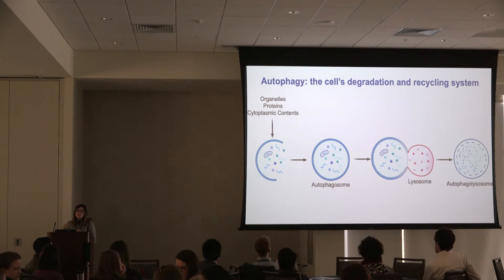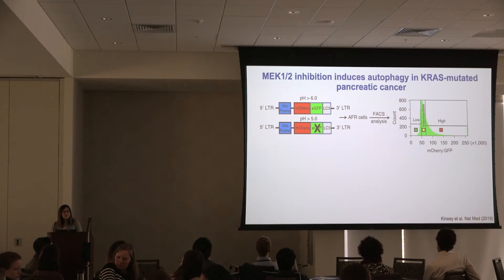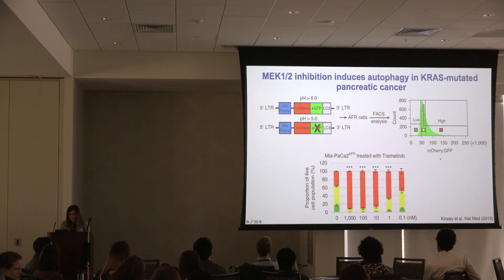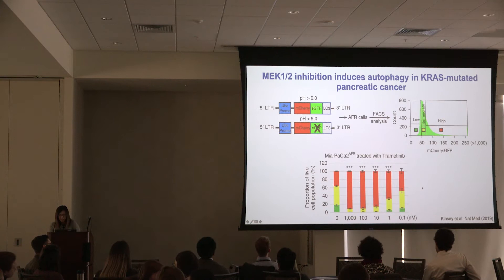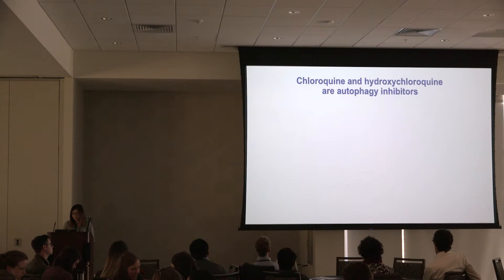Autophagy is an ongoing process that can be upregulated during times of cellular stress, such as nutrient deprivation. We can measure autophagy in vitro using a fluorescent reporter assay and flow cytometry — areas marked in red indicate cells with high autophagic flux. In KRAS-mutated pancreatic cancer cells, treatment with increasing doses of trametinib induces more autophagy. We found this is a self-protective mechanism to avoid cell death, giving us rationale to target autophagy in combination with MEK inhibition.